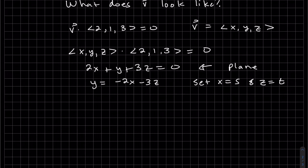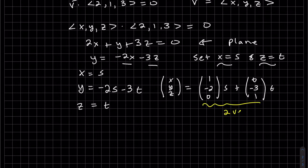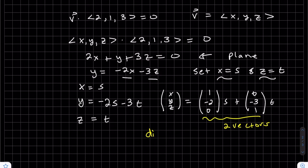The two free variables. So we set x equals s. So we have two vectors here. And so our dimension of this h is 2.